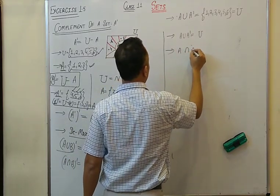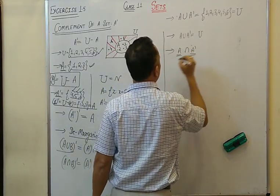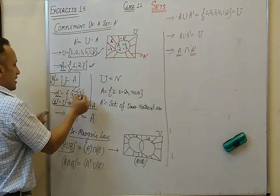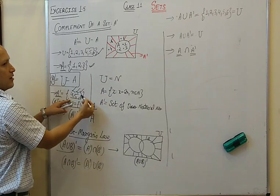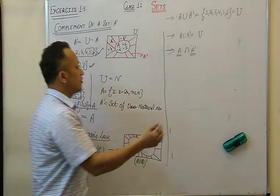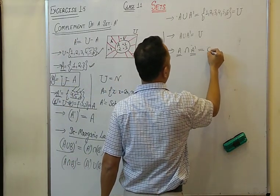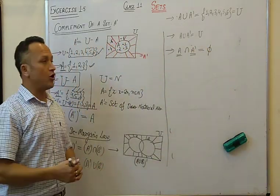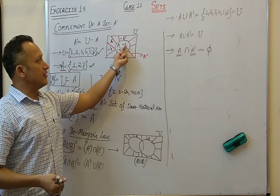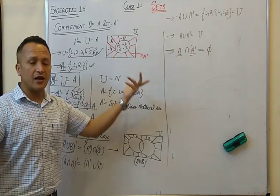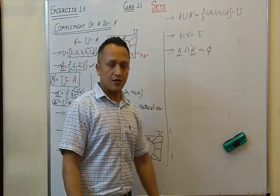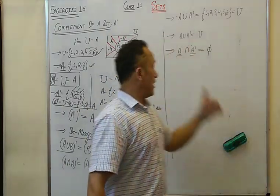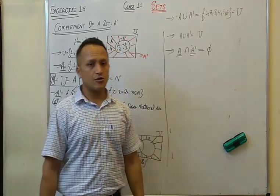What would be A intersection A complement? A and A complement share no common elements — they are completely disjoint. In the Venn diagram, set A and its complement have no overlap. So A ∩ A' = empty set (∅).